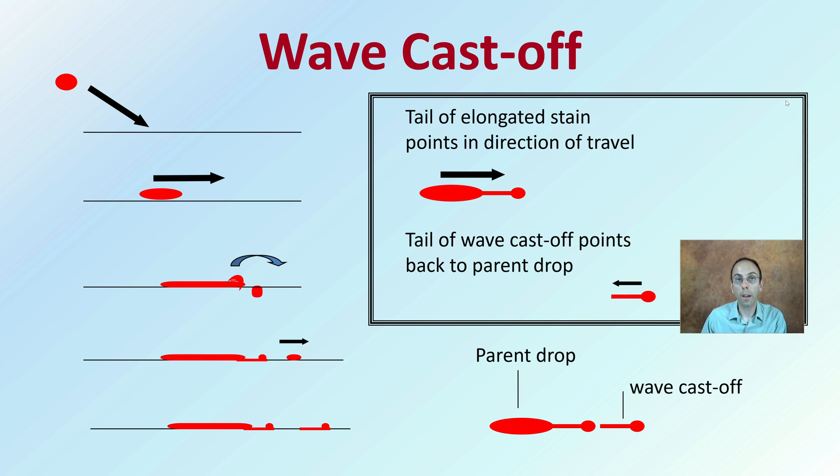It can be very important when looking at a crime scene. If you see it on a wall or ceiling, that can help you determine the direction.